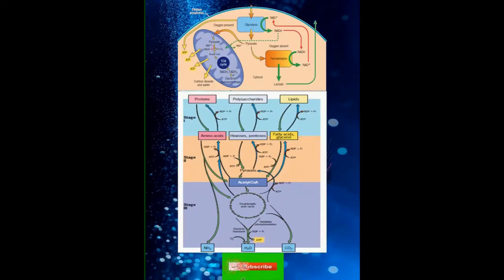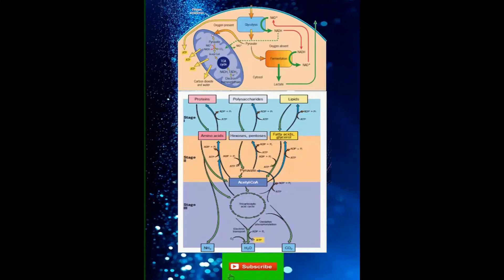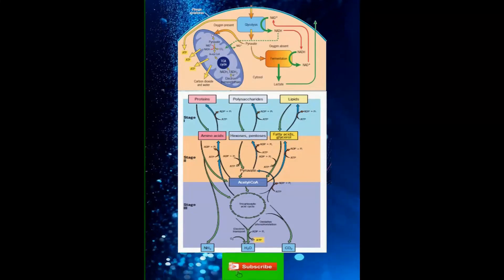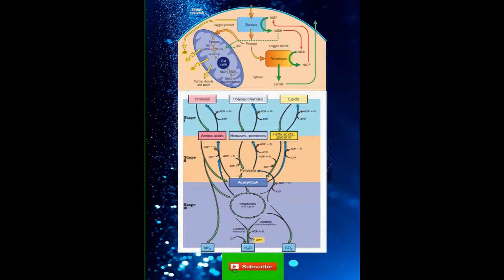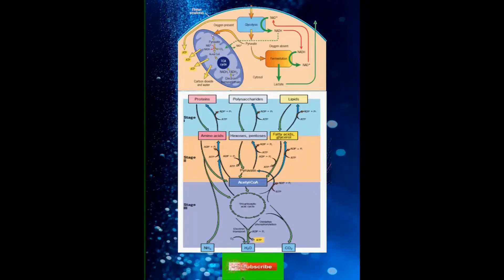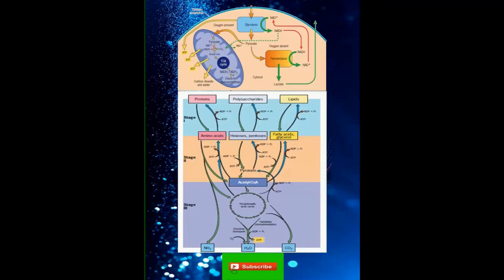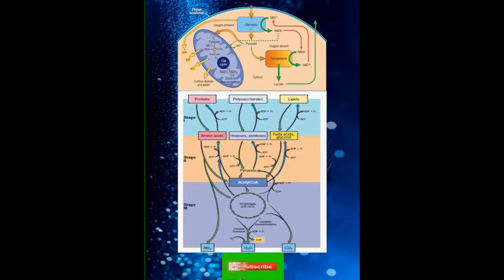As we will discuss at length, energy released by catabolic pathways is stored temporarily in two forms: as high energy phosphate molecules called ATP and as high energy electrons primarily NADH.